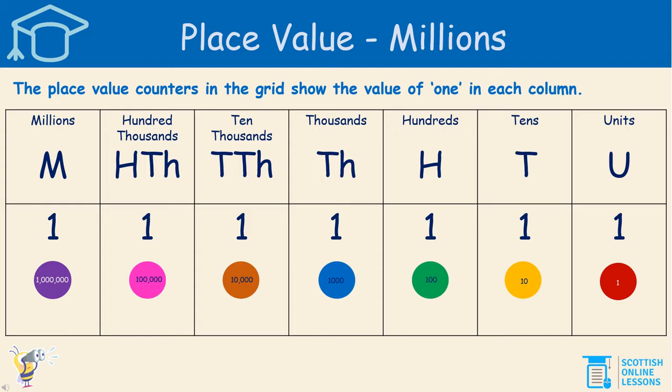As you can see, the place value counters in the grid show the value of 1 in each column. We'll look to the lowest value first, which is the units on the right hand side of the grid. One unit has the value of 1, as you can see in that little red place value counter. The next column is the tens column — the value of 1 is 10. The hundreds column, the value of 1 is 100.